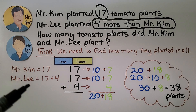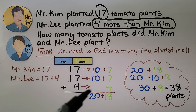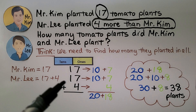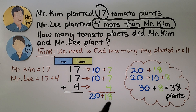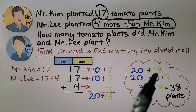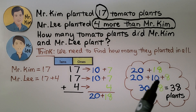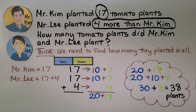Mr. Kim planted 17, and Mr. Lee planted 17 plus 4 more. 17 is 10 plus 7. We add the 4 more to the ones: 7 plus 4 is equal to 11. 10 plus 10 is 20. Now we have 20 plus 11. The 11 is a 10 plus 1. We add 20 plus 10 to get 30, then add the 1 left over. Mr. Kim and Mr. Lee planted 38 plants in all.